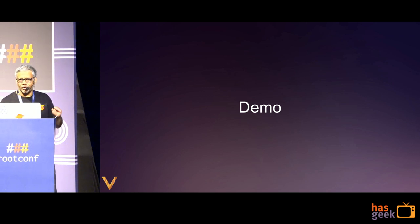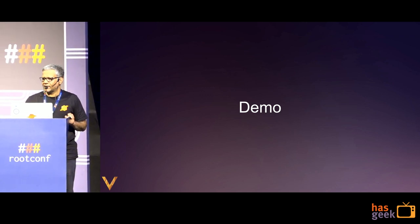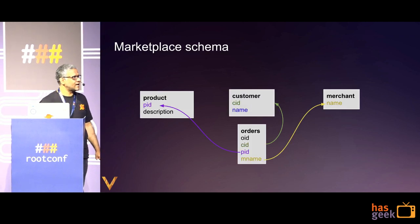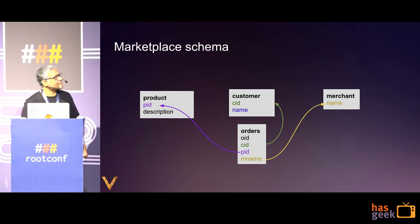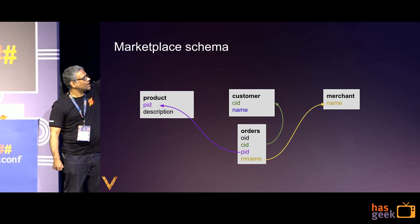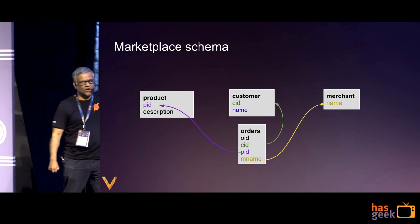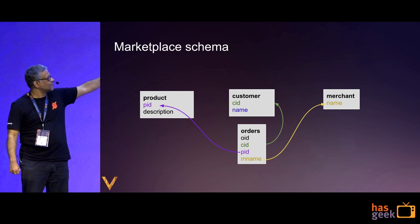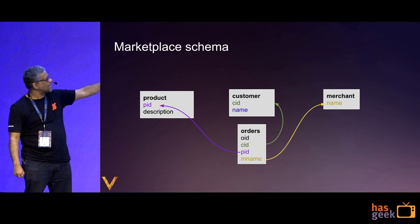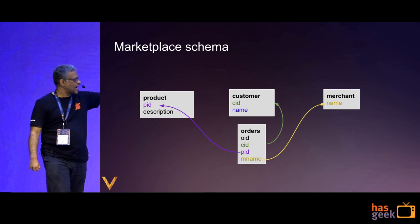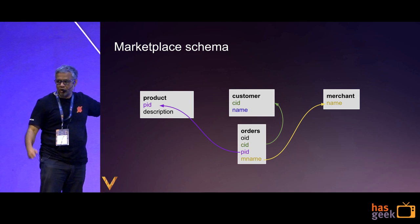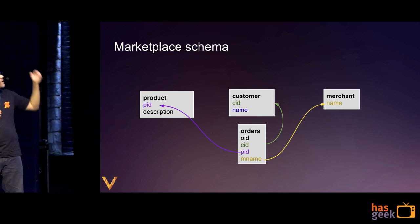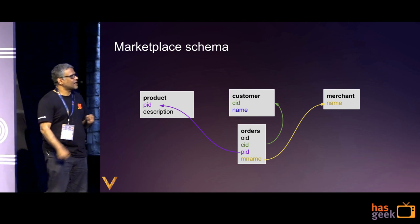Now I'm going to show you a demo — mostly screenshot-based. Let's set up the demo by talking about a use case: a marketplace. You have products, customers, merchants, and orders. Each order has an order ID, a customer ID (because an order is placed by a customer), a merchant (because the order is placed with a merchant), and a PID for the product. This is the schema of our marketplace.